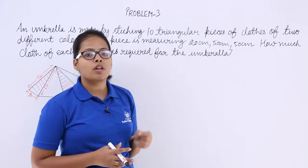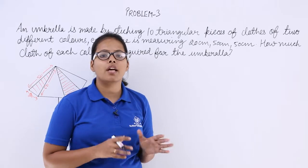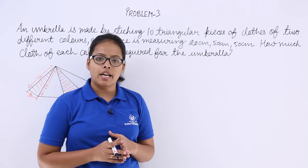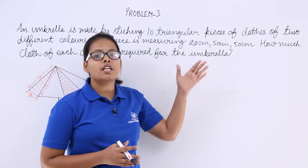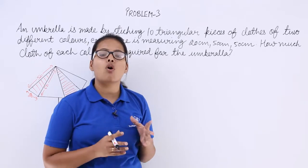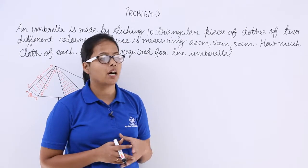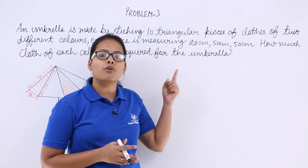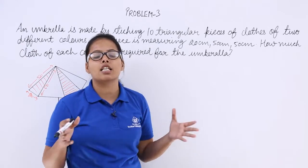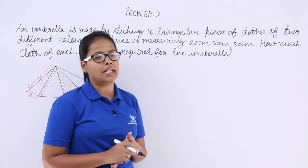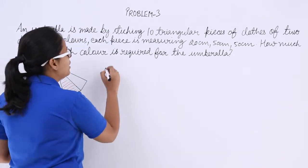In 10 triangular pieces, 5 will be of blue color and another 5 will be of red color. You know that each piece has the same area. If you calculate the area for one triangle, you will get the areas for all the triangles simultaneously. So what can you write here?